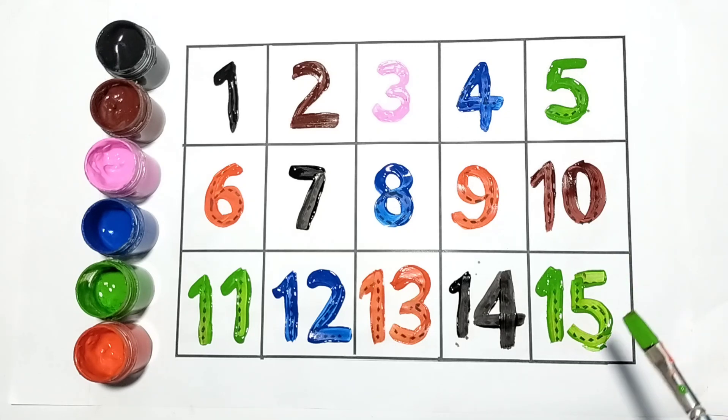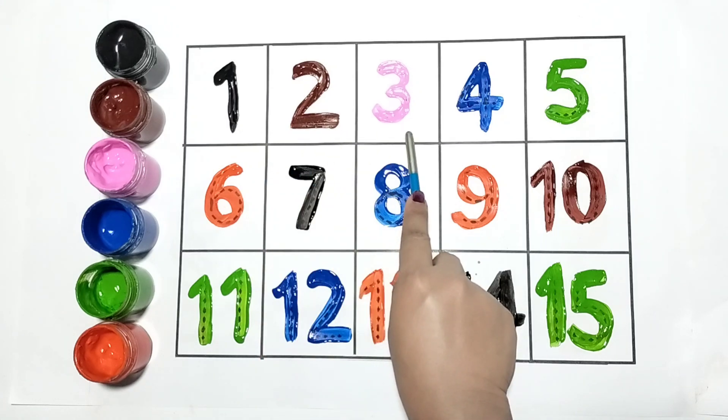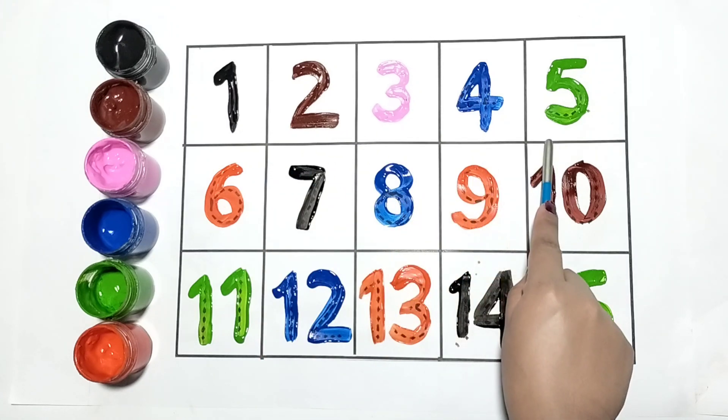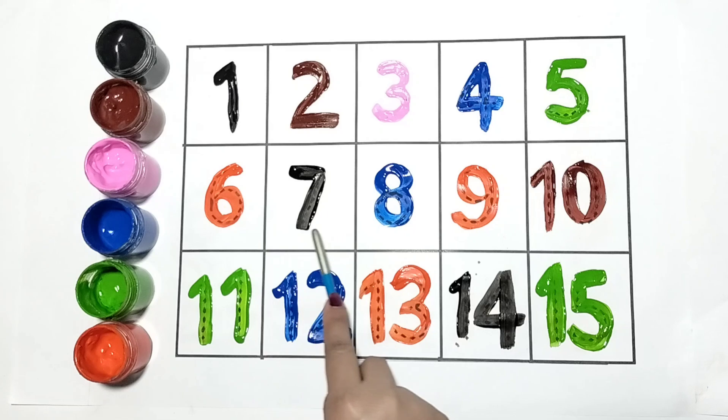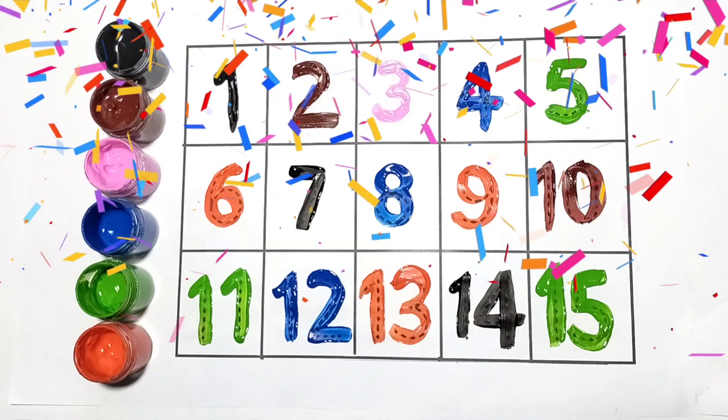Let's repeat: 1, 2, 3, 4, 5, 6, 7, 8, 9, 10, 11, 12, 13, 14, 15. All the numbers are looking beautiful.